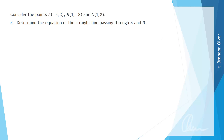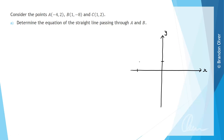Before we get into finding the equation we're going to start with a quick sketch. We'll start with a set of axes — the x-axis and the y-axis — and locate the coordinates A, B and C. A is at negative 4, 2, so that point there is A. B is at 1, negative 8, so that is B. And C is at 1, 2, so that is C.